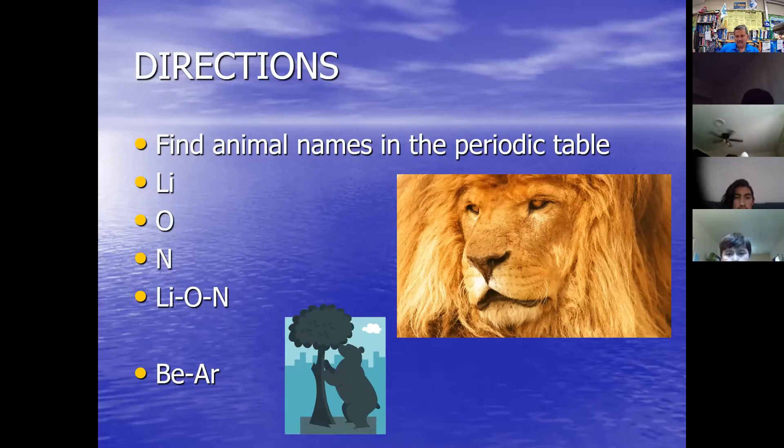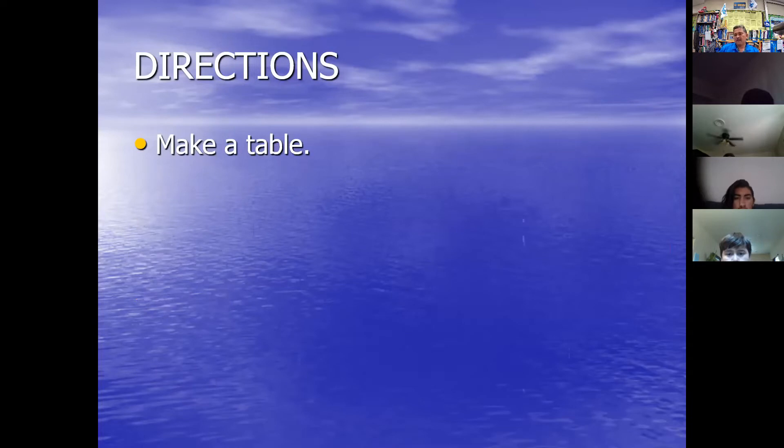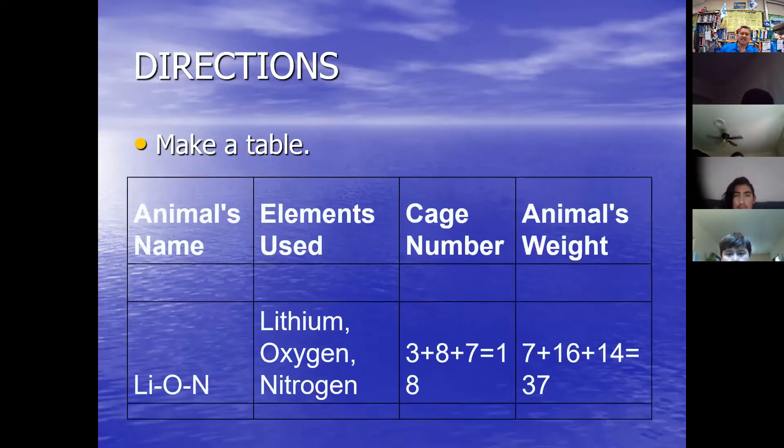Now that you've seen some examples, you're going to organize these in a chart or table. You've got the animal's name spelled out this way so we can see the different elements used. Lithium, oxygen, nitrogen. List those where it says elements used.